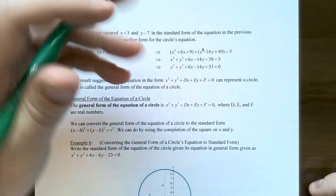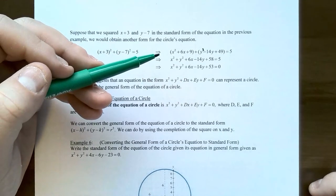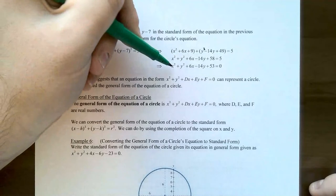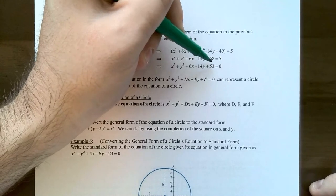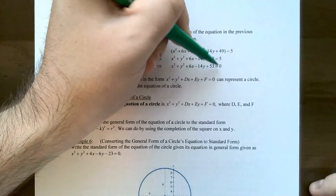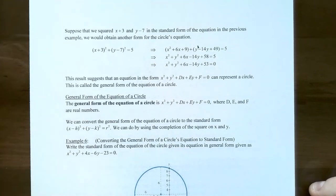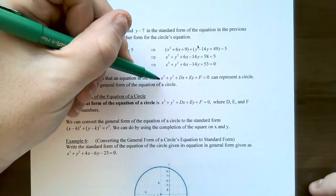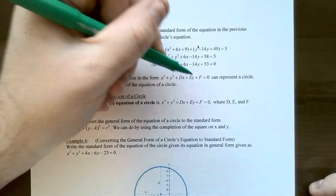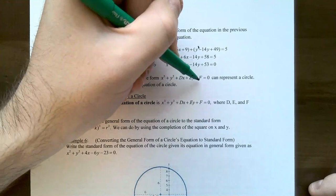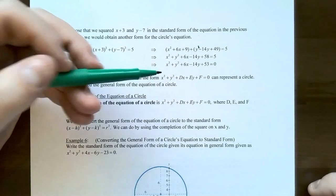Collecting like terms: x² + y² + 6x − 14y + 58 = 5. Moving all terms to one side by subtracting 5: x² + y² + 6x − 14y + 53 = 0. This type of equation is called general form. General form has the structure: x² + y² + Dx + Ey + F = 0, where D, E, and F are real numbers.